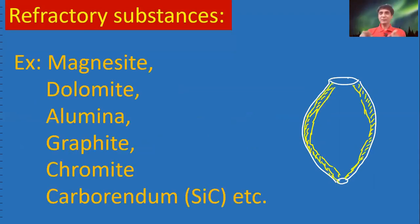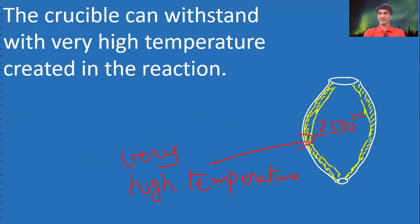The inside part is coated with some materials like magnesite, dolomite, chromite, etc. Such are called refractory materials.